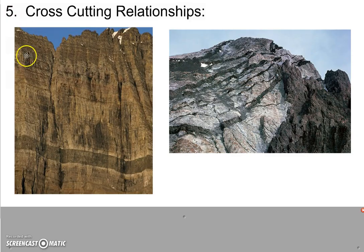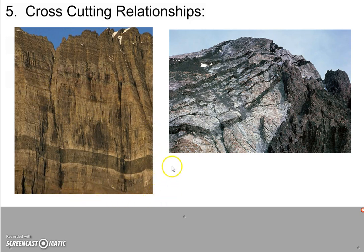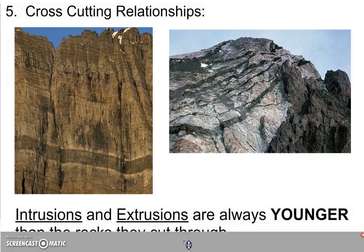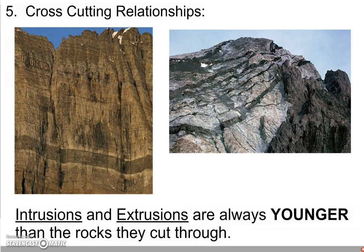Rule number five has to do with cross-cutting relationships. We're looking at intrusions, where magma intruded or burned its way into rock that was already there. In one picture, light brown rock on the top and bottom was there first, and magma intruded into it. In another, light gray rock was there first and the black formed when magma intruded into it. So the rule is: intrusions and extrusions are always younger than the rocks they cut through.